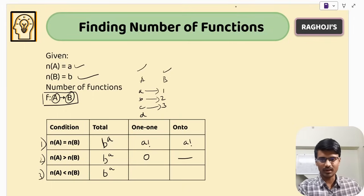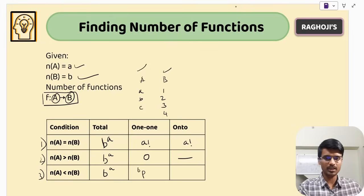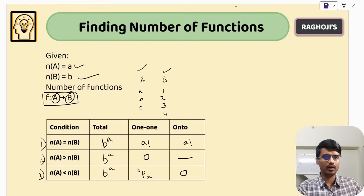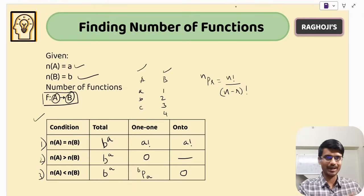Case 3: when |A| < |B|. Say A has three elements and B has four elements. In this case, the formula for number of one-one (injective) functions is B P A — that is, a permutation: n P r = n! / (n−r)!. The number of onto functions is 0, because you cannot cover all elements of B when A is smaller. Please make a note of this table and memorize these formulas.